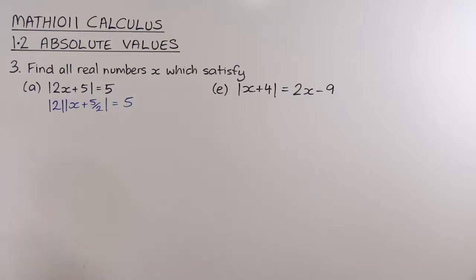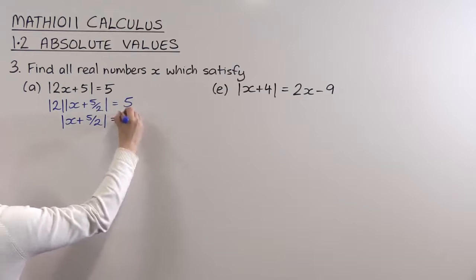I can split out that absolute value because that's multiplication there. Absolute value of 2 is just 2, so this just says the absolute value of x plus 5/2 is equal to 5/2. We're just dividing both sides by 2 there.